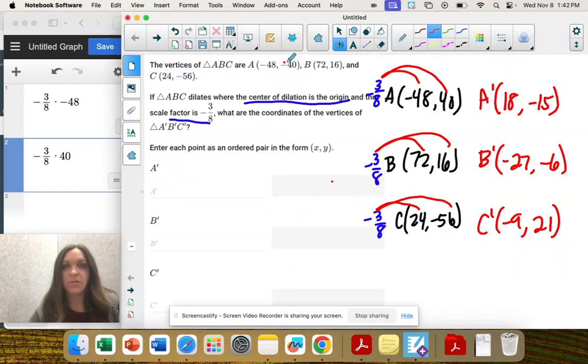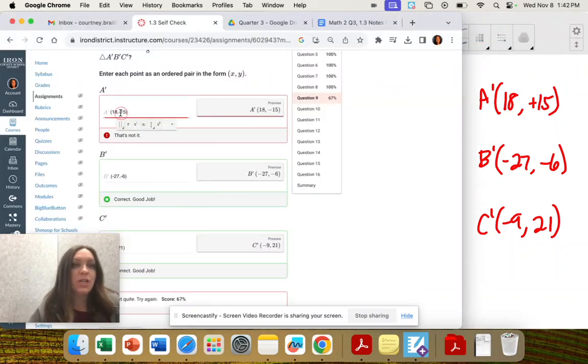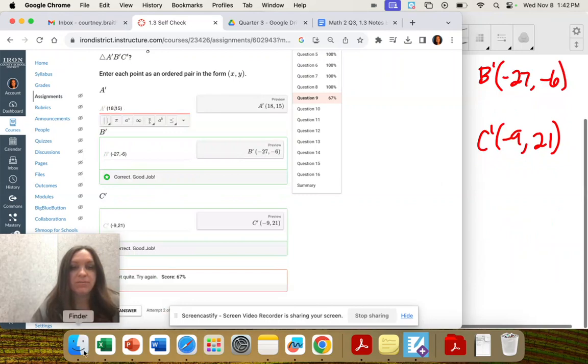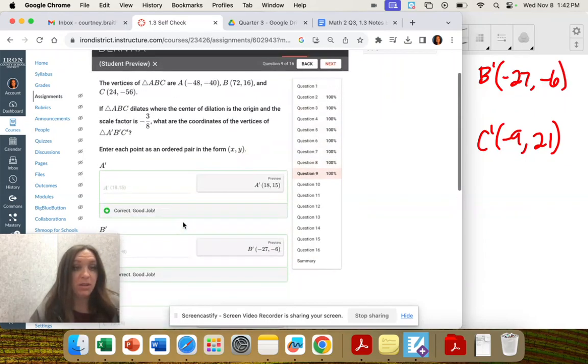Oh, negative 40. I didn't write it down right. That's going to make that positive 15. Always check and make sure you write stuff down right if you got the wrong answer and you think you got it right.